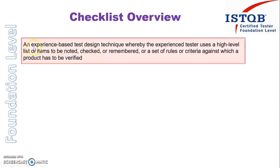The definition of a checklist is an experience-based test design technique whereby an experienced tester uses a high-level list. So what it is telling us is that an experienced tester will have a high-level list, and with this list, let's check what he will do.